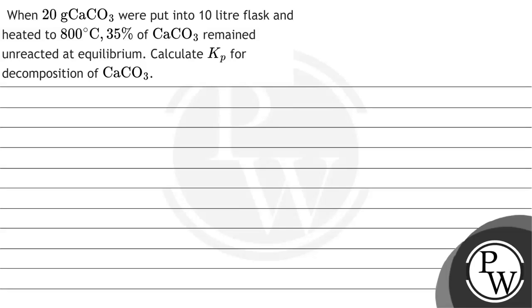Hello, let's read the question. When 20 grams of calcium carbonate were put into a 10-litre flask and heated to 800 degrees, 35% of calcium carbonate remained unreacted at equilibrium. Calculate the Kp for decomposition of calcium carbonate.